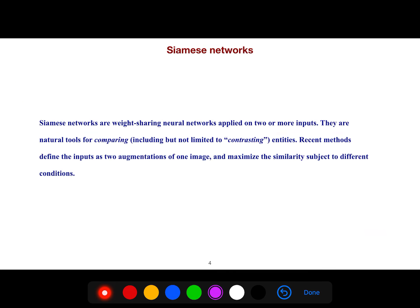Siamese networks are weight-sharing neural networks applied on two or more inputs. They are natural tools for comparing entities. Recent methods define the inputs as two augmentations of one image and maximize the similarity subject to different conditions.